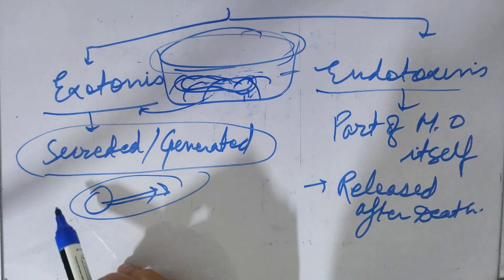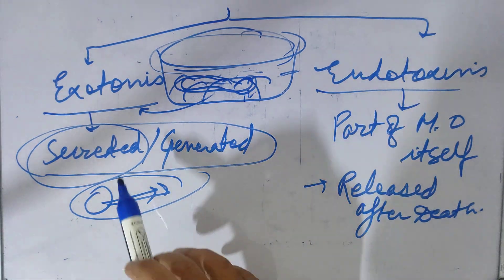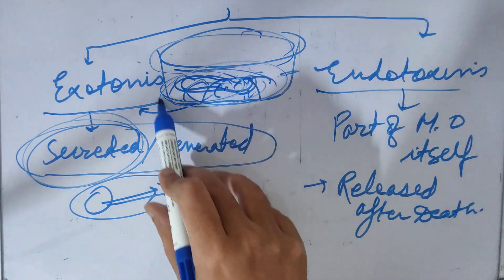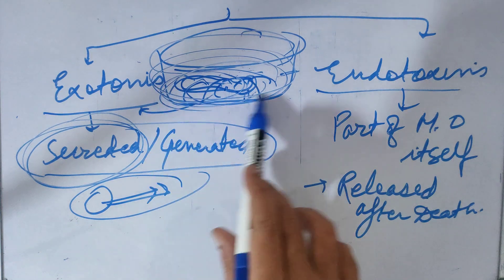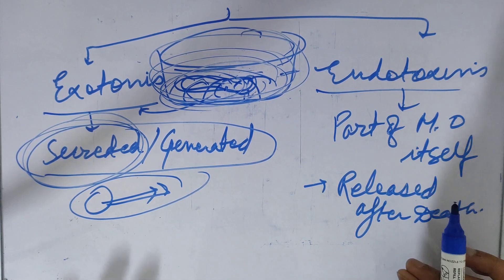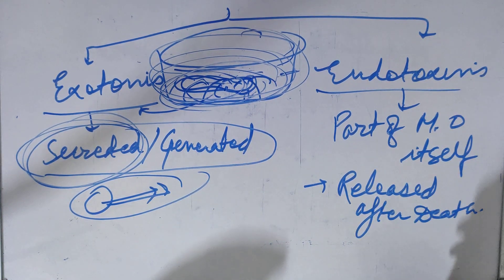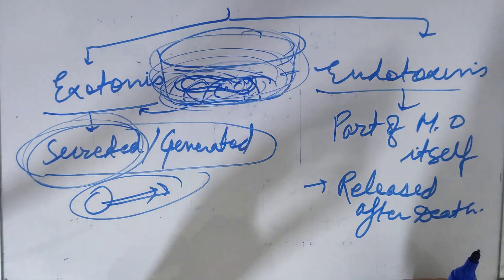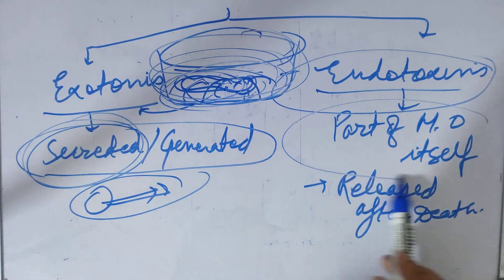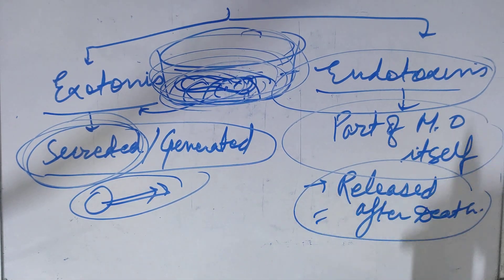Those toxins are part of itself but not secreted knowingly by bacteria. The toxins are already in the body of the bacteria, and when it dies then the toxins are released. This is endotoxins. So this is the major difference between exotoxins and endotoxins.